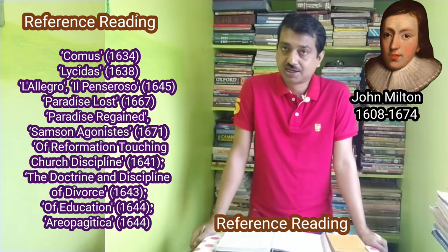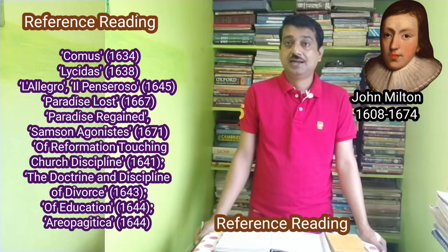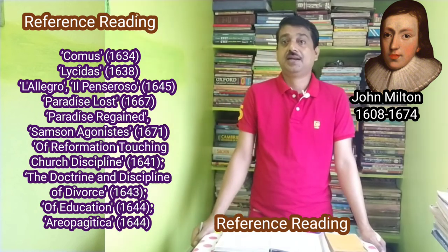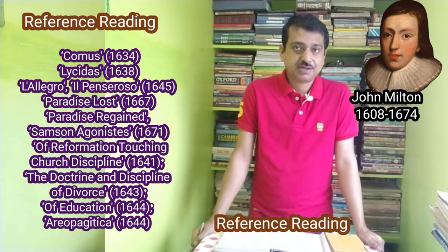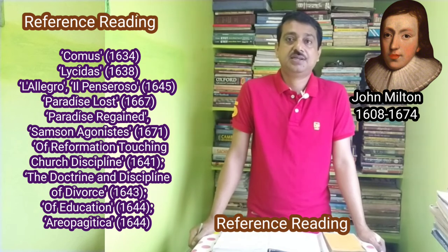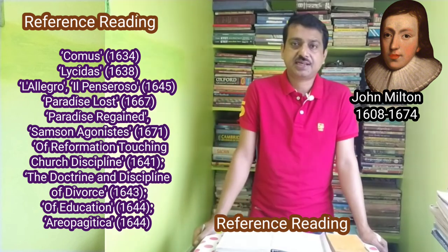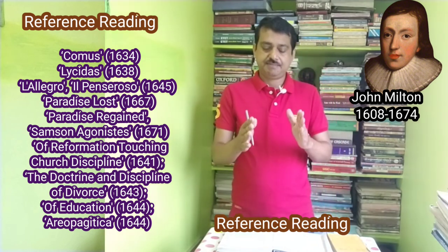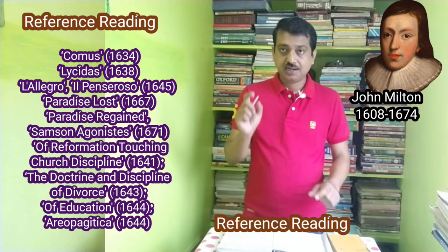Milton's poetical works include Comus, Lycidas, L'Allegro, Il Penseroso, Il Serioso, Paradise Lost, Paradise Regained, Samson Agonistes, and many of his sonnets and religious sonnets. His pamphlets also include Of Reformation Touching Church Discipline, the Doctrine and Discipline of Divorce, Of Education, Areopagitica, and the Tenure of Kings and Magistrates. You must understand the basics of his writing content and conceptual writing in summary at least, as it will help you better understand the concept by which Milton shapes all these works.